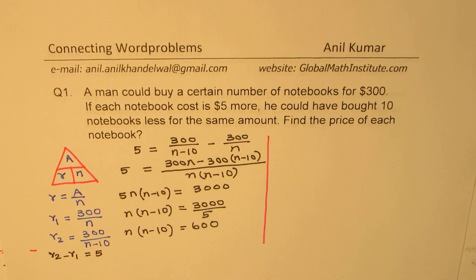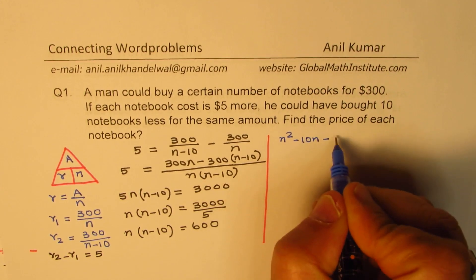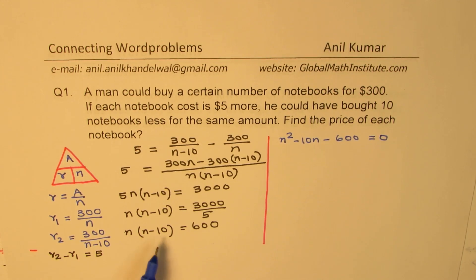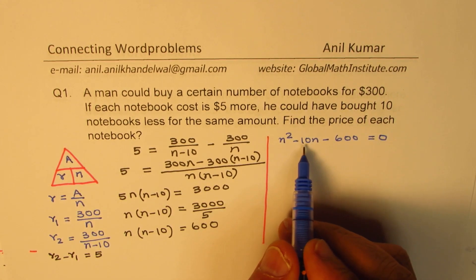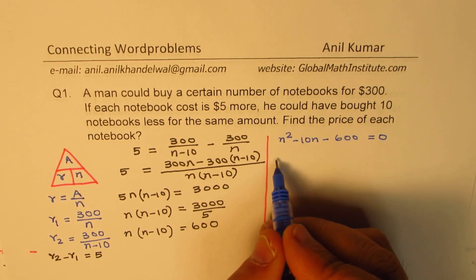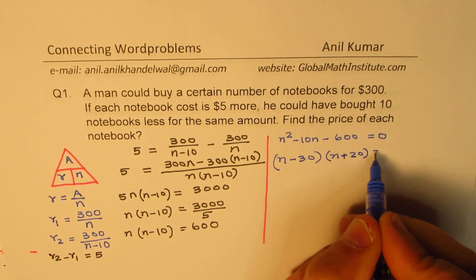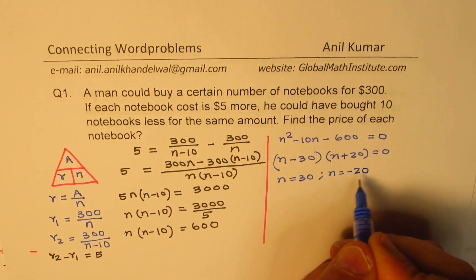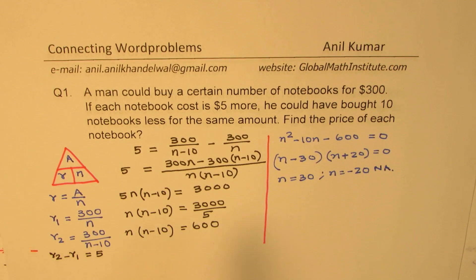That is a quadratic equation. We can think of two numbers whose product is 600 and difference is 10 — those are 20 and 30. Factoring: (N−30)(N+20) = 0, giving N = 30 or N = −20. Clearly, −20 is not valid for this application. So N = 30.